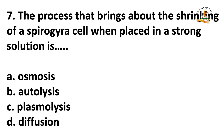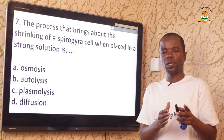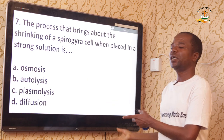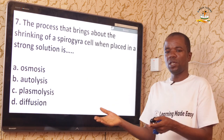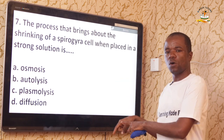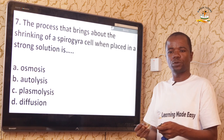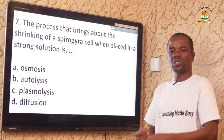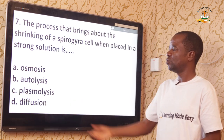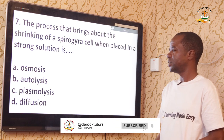Question seven: The process that brings about the shrinking of a Spirogyra cell when placed in a strong solution is plasmolysis. Plasmolysis is defined as the shrinking of a cell when placed in a hypertonic solution. When Spirogyra is placed in a salt or sugar solution, water moves out of the cell by osmosis, the cell shrinks, the vacuole peels away from the plant wall, and the plant can eventually die. The correct answer is option C — plasmolysis.